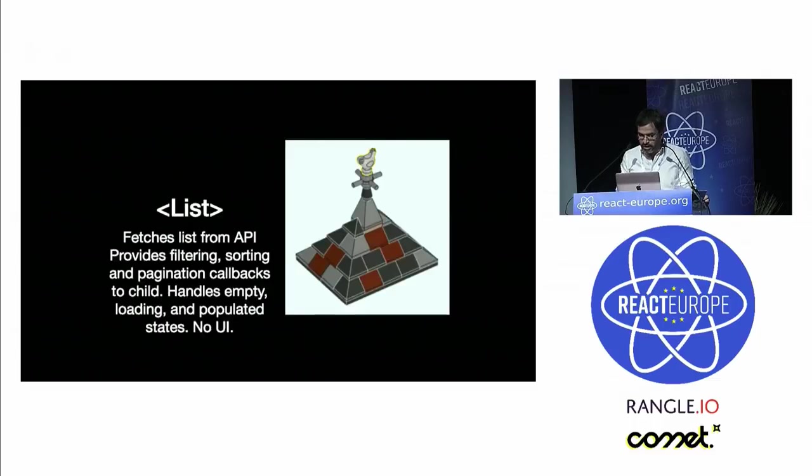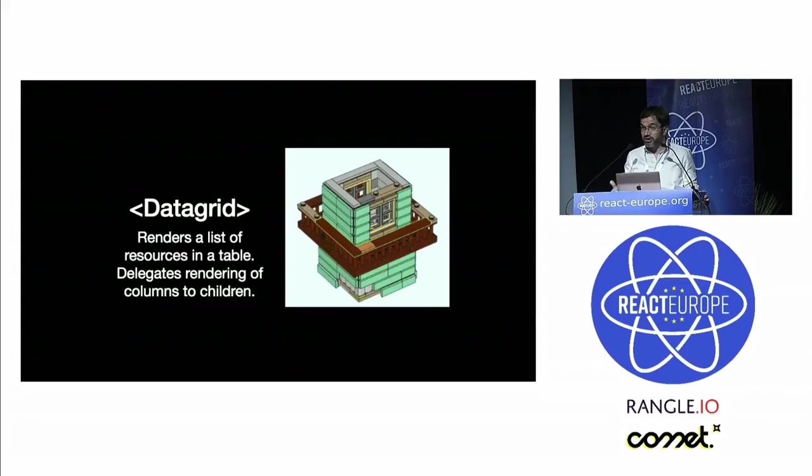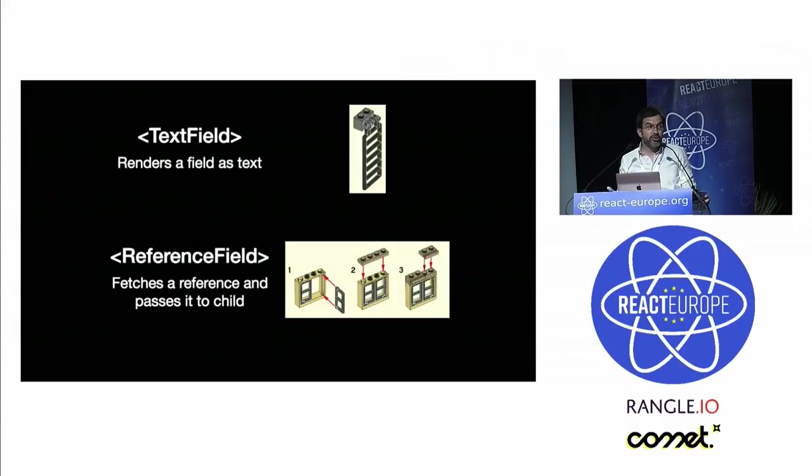Let me show you how it works. So React Admin provides a connected list component, which just fetches the data from the API, prepares it for the view, and passes it to its child. And the child can be, for instance, a data grid responsible for displaying each record in a row, but not rendering the cells. For that, it delegates to its own children, which can be a text field or a reference field, for instance, responsible for fetching a foreign key.